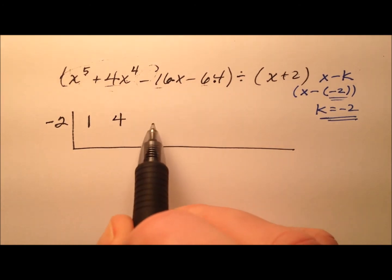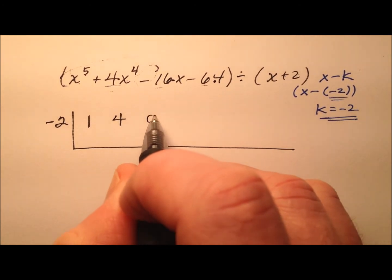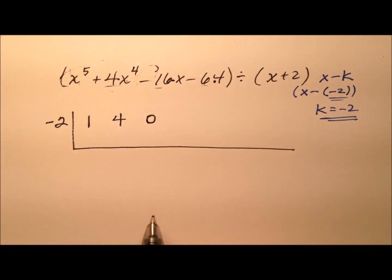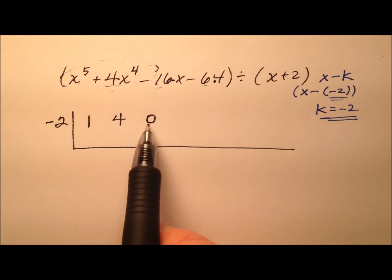Well, we're missing the x cubed term, so its coefficient is zero, so we need to write a zero here because we need a placeholder, because it's going to affect our final answer if we don't.